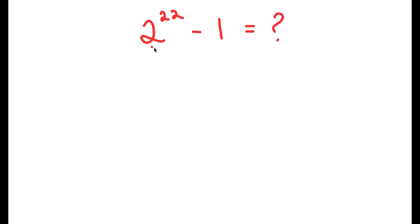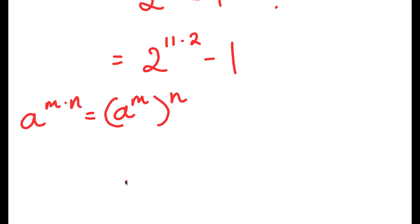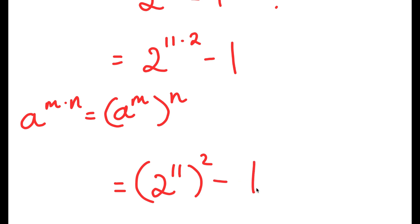To start off, I'm going to rewrite this as 2 to the power of 11 times 2, minus 1. The reason I did this is because if I have something in the form a to the power of m times n, this is equal to a to the power of m to the power of n. So 2 to the power of 11 times 2 equals 2 to the power of 11 to the power of 2, and I have this minus 1.